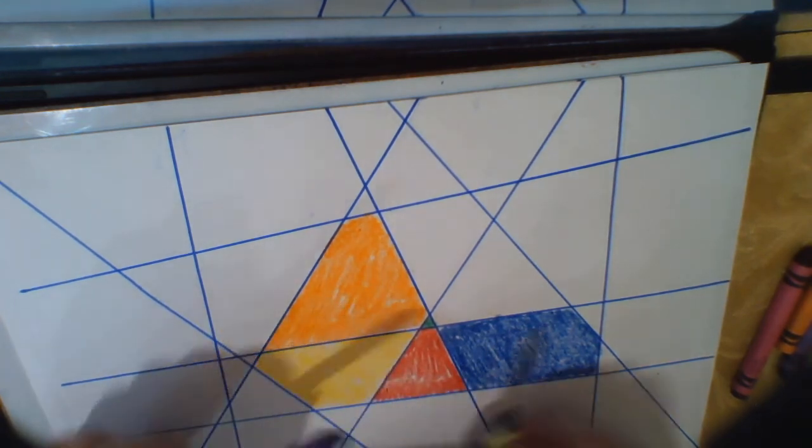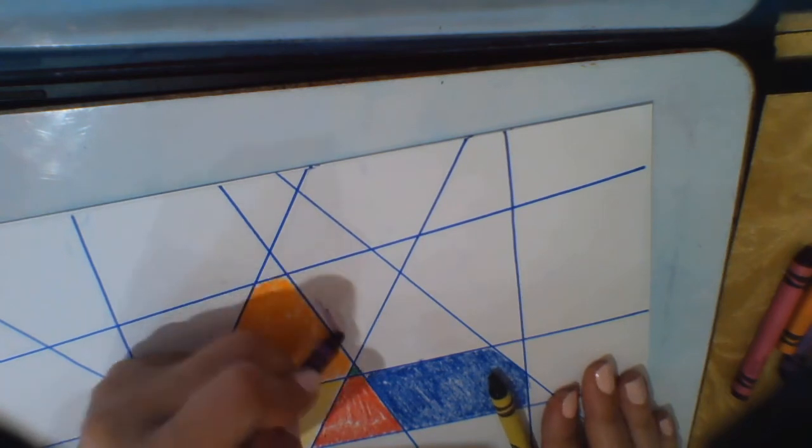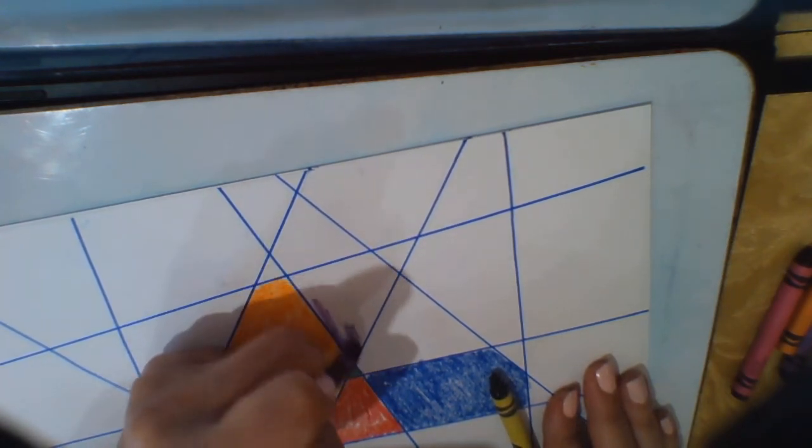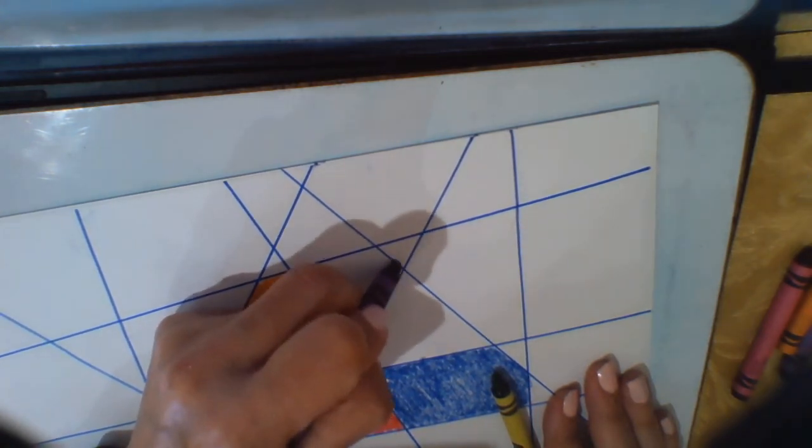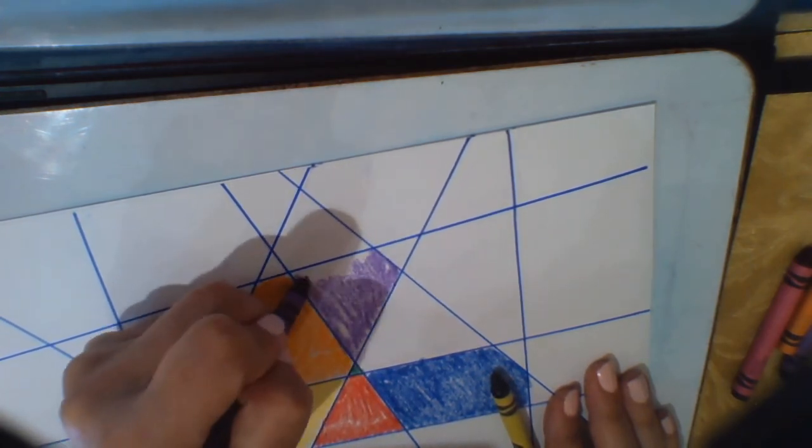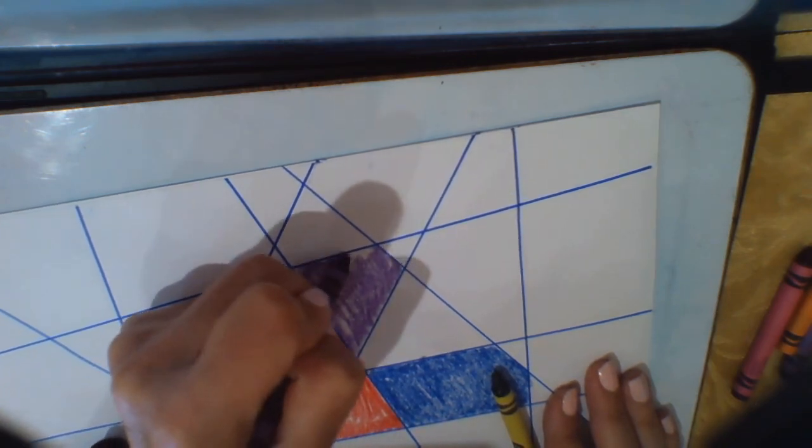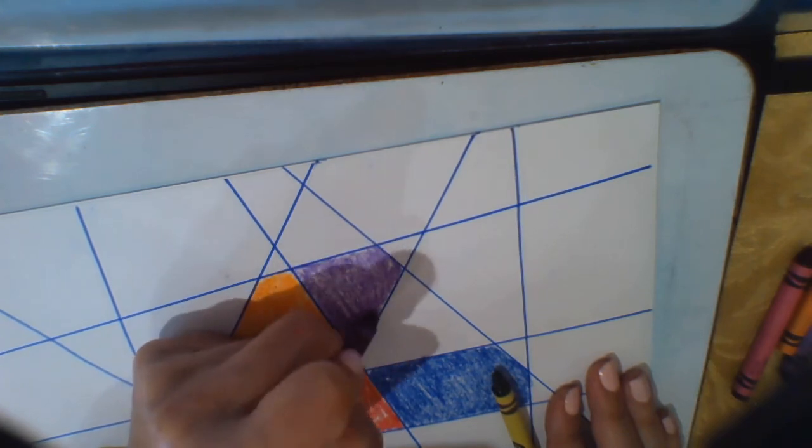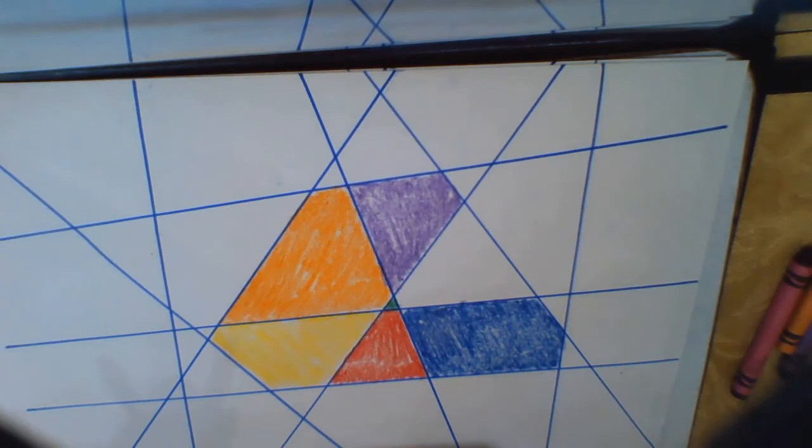And then maybe I want to color here. Do this shape here. So I'm going to use my purple crayon and just color away. Okay. All right. Okay. So as you can see, it's starting to take some shape.